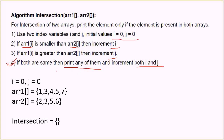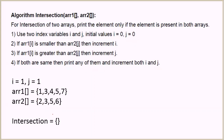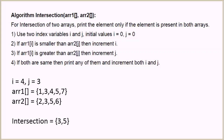Let's do the dry run with the same arrays. We compare 1 with 2 — 1 is smaller, so we increment i and do not add anything to the intersection array. We compare 3 with 2 — 2 is smaller, so we just increment j. We compare 3 with 3 — common element, so we put 3 in the intersection array and increment both i and j. We compare 4 with 5 — 4 is smaller, so we increment i. We compare 5 with 5 — equal, so we put 5 in the intersection array and increment both i and j.